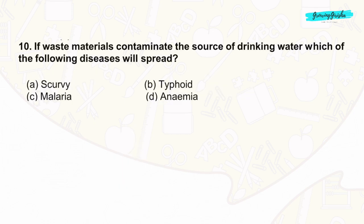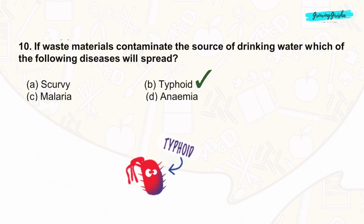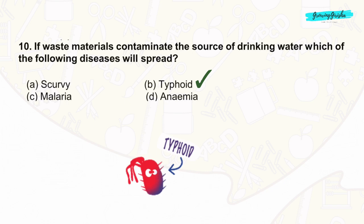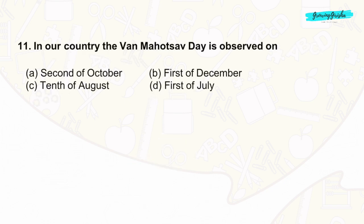Question 10: If waste materials contaminate the source of drinking water, typhoid will spread. Typhoid is a bacterial infection primarily caused by the bacterium Salmonella typhi. The correct answer is option B: typhoid.